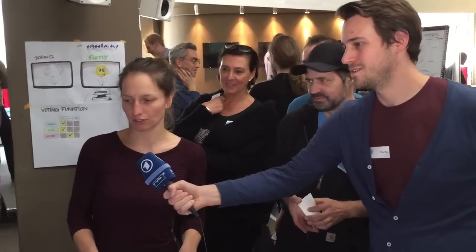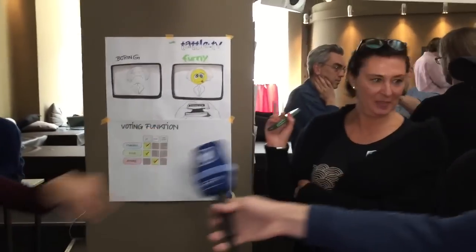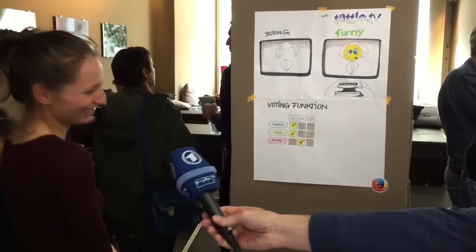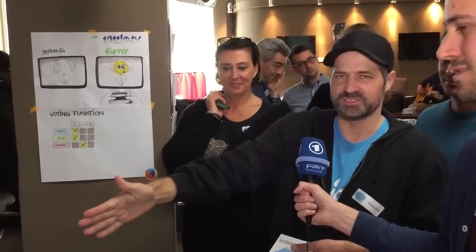We also have a voting function for more participation. A lot of people don't know who is this politician or who is this person. So with the face detection, everybody can see who this politician is, and they can Google the information or directly click a link. It's very easy for the people.